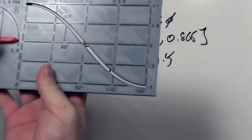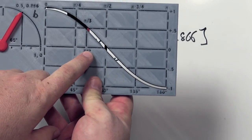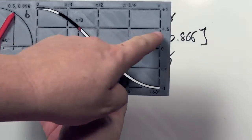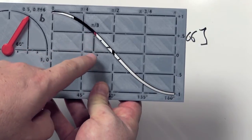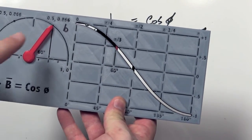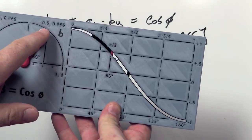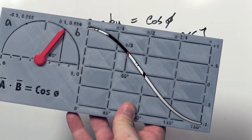Now, 0.5 along this scale, if we run our finger across and cross it here, it's a third of π, which is 60 degrees. So the angle θ between these two points is 60 degrees.